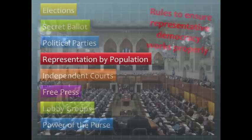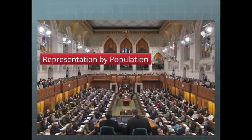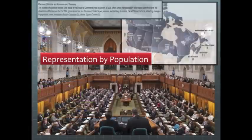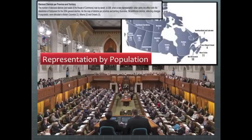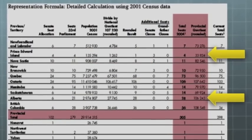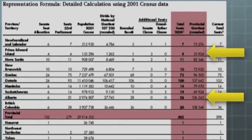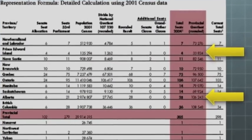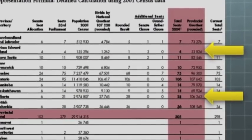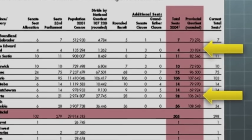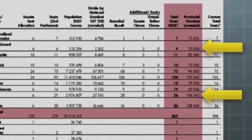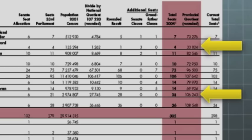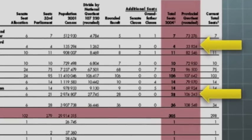Next, representation by population makes sure that when there are debates in the legislature, each region has an equal voice, because their representative is responsible for voicing the opinions of the same sized group of people as the other representatives. Because Alberta is growing quickly, the population of our ridings have gotten bigger than other provinces, so they get reorganized to make sure we have the same proportion of representatives in the House of Commons as other provinces. We're going to do a whole other lesson on it.